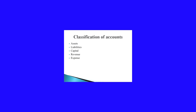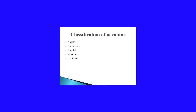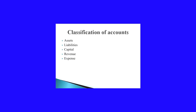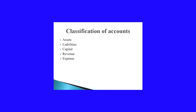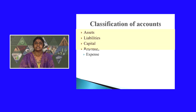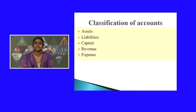For recording transactions in the journal, business transactions are classified. Business transactions can be classified as assets, liabilities, capital, revenue, and expenses. At this point of time, you should know what are assets, liabilities, capital, revenue, and expense. So let us study that.